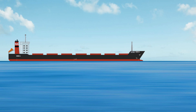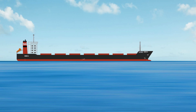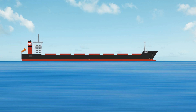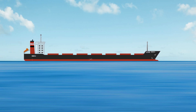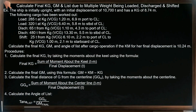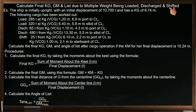This video is intended for maritime students and for those who are studying stability calculations. In this problem, we will calculate the ship's final vertical center of gravity (KG), final metacentric height (GM), and angle of list, considering multiple weights being loaded, discharged, and shifted.